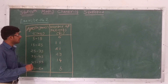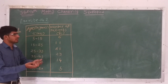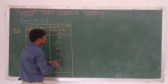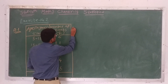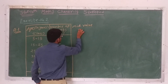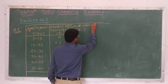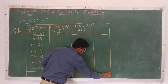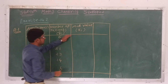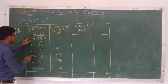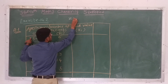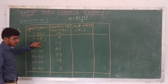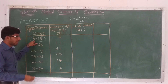So first we find mean. We have to find mean by using a direct method. So in the direct method we have to find fi·xi. First of all we have to find xi. The formula of xi is: xi equals upper limit plus lower limit divided by 2. So here lower limit is 5 and upper limit is 15, so 15 plus 5 divided by 2 equals 20 by 2, which is 10.